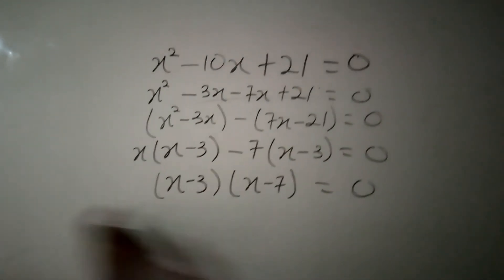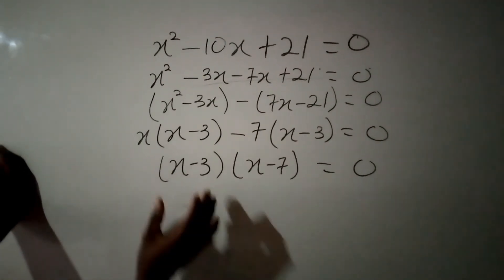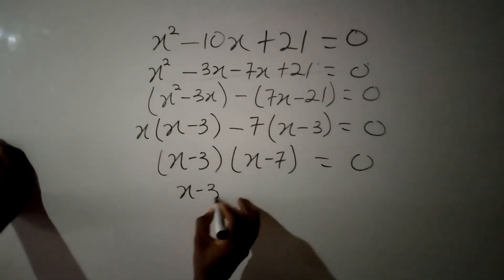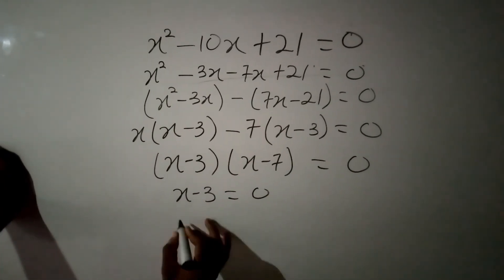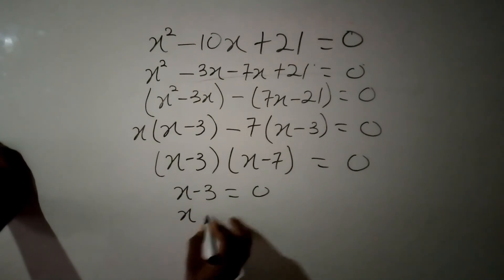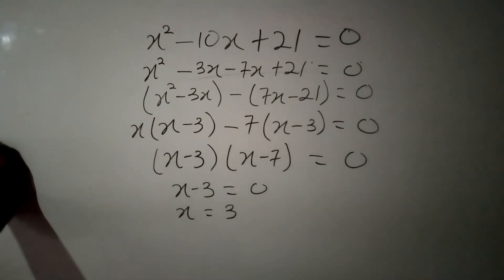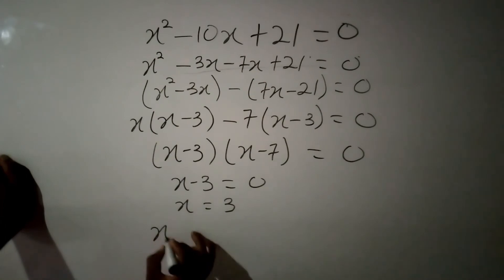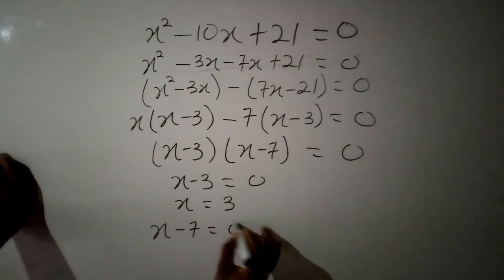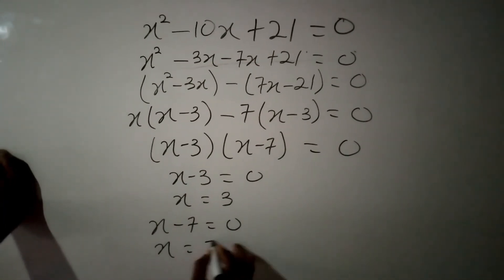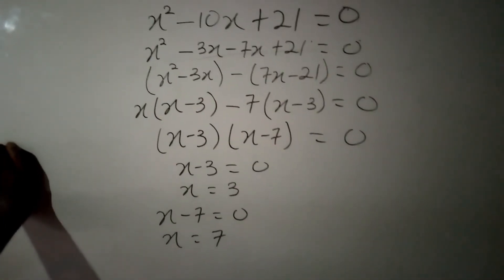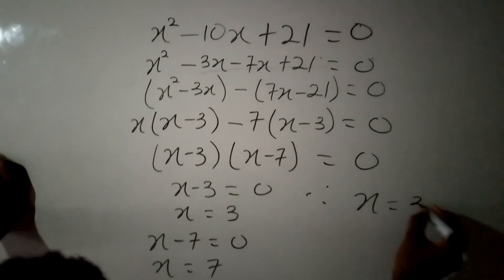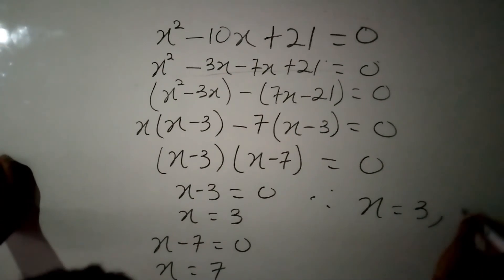We then equate each bracket to zero. Taking the first bracket, we have x minus 3 equal to 0, which gives us x equal to positive 3. In our next bracket, we have x minus 7 equal to 0, giving us x equal to positive 7. So therefore, we have x equal to 3 and x equal to 7. This is our final answer.